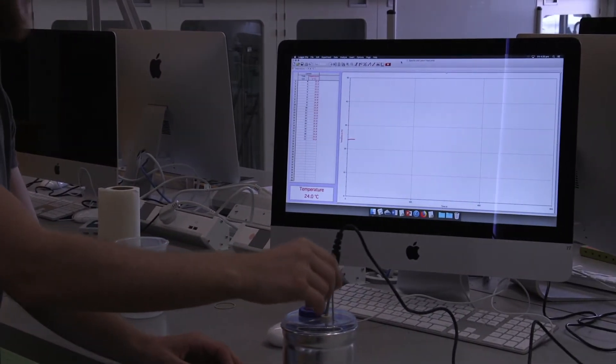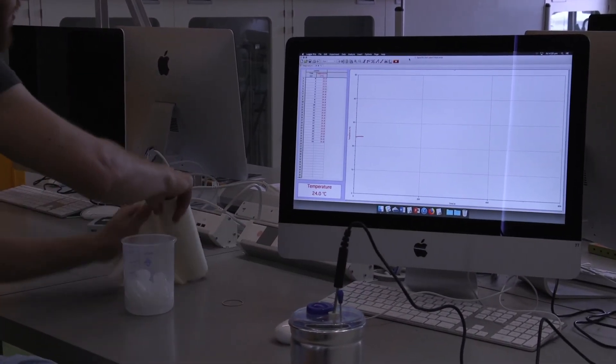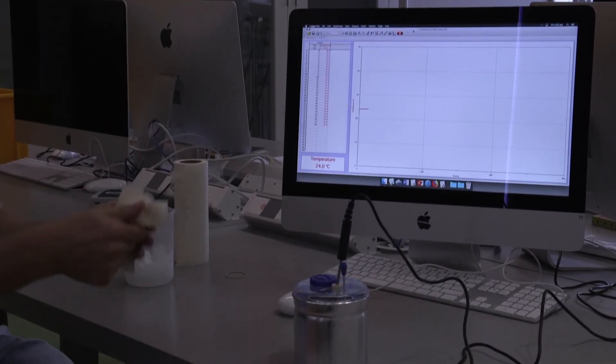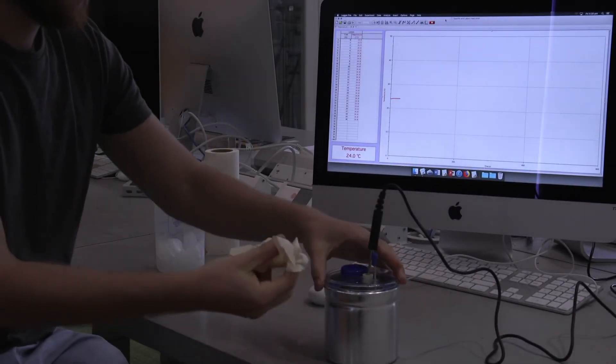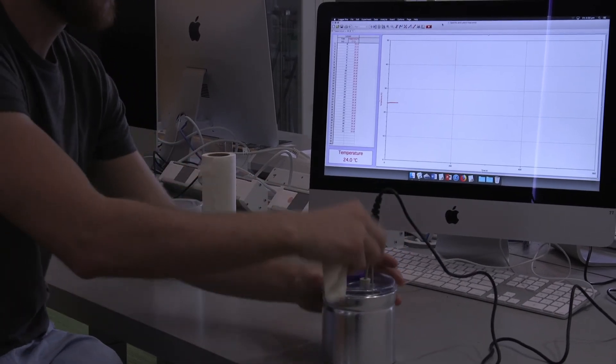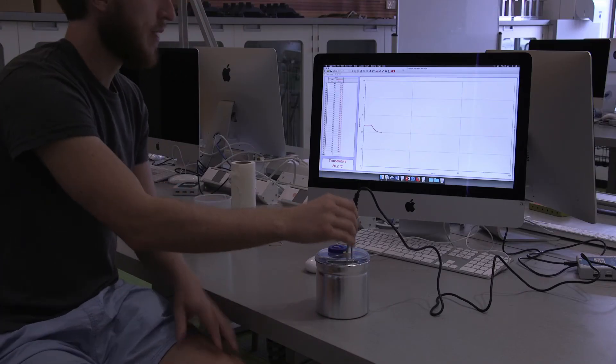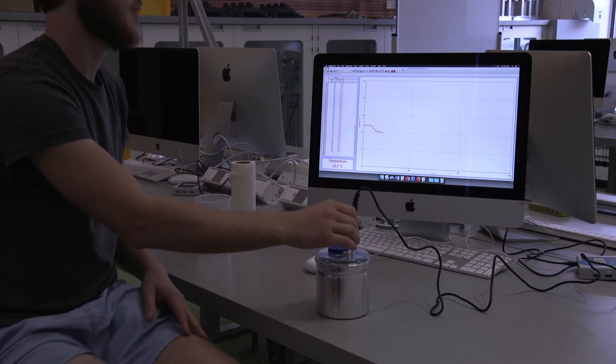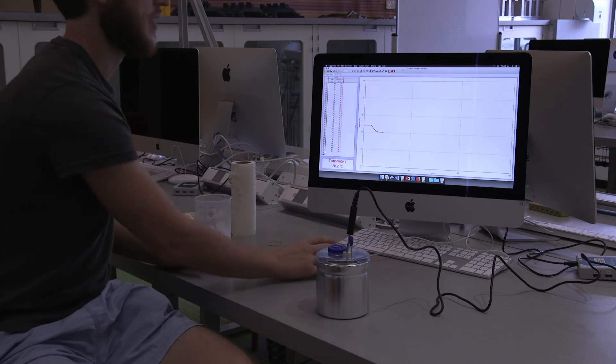Okay, so once you're confident that you're at equilibrium, you want to grab some ice. Make sure that it's dry when you put it in. And keep stirring. Okay, and so you want to keep stirring until you reach a new equilibrium, so when the line flattens out again. And that looks about now, so I'll go ahead and stop.